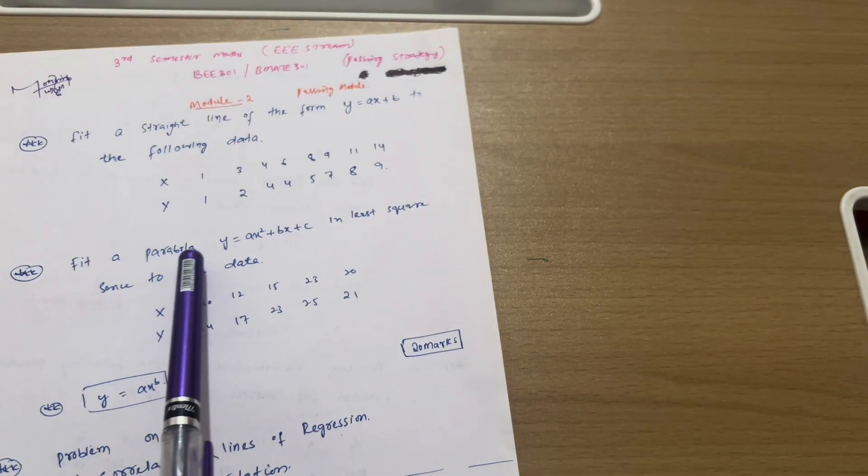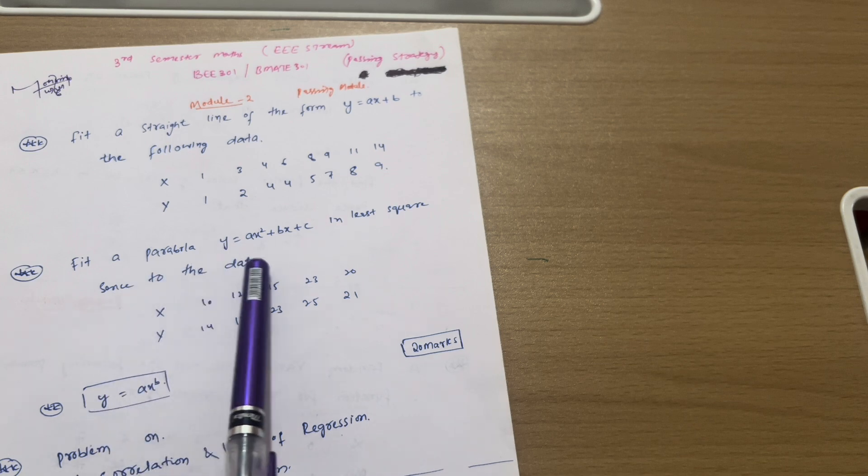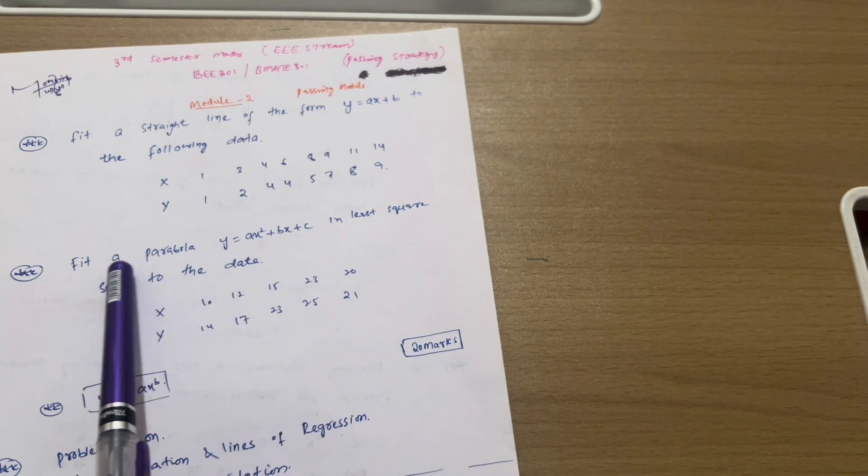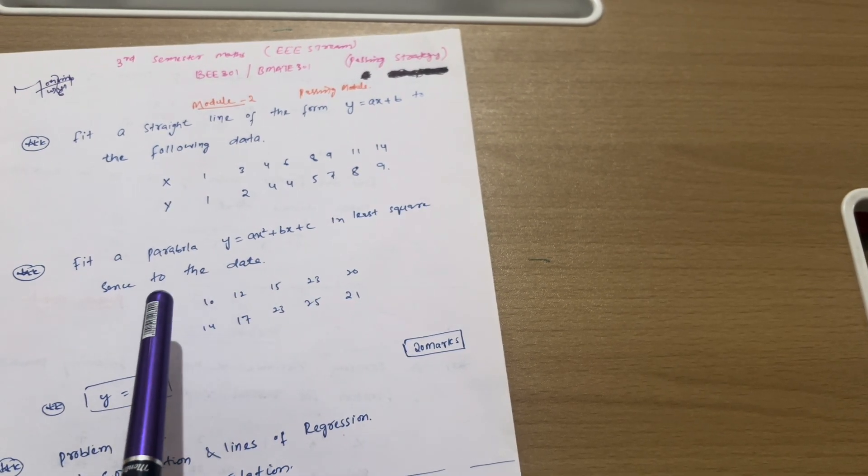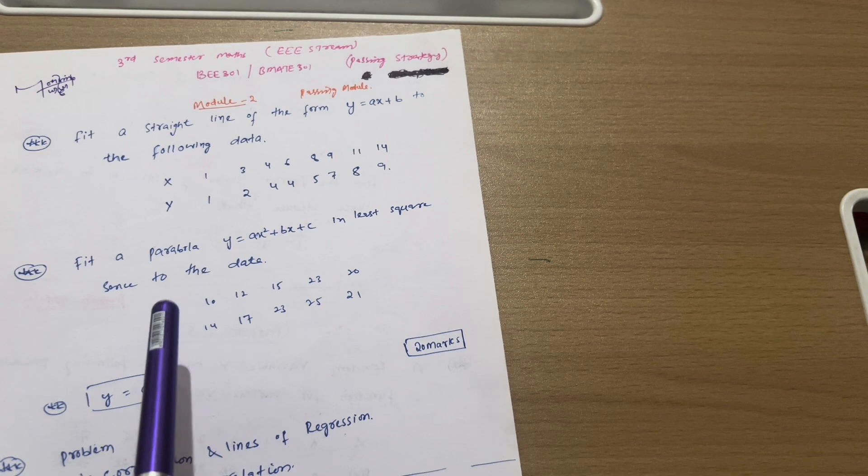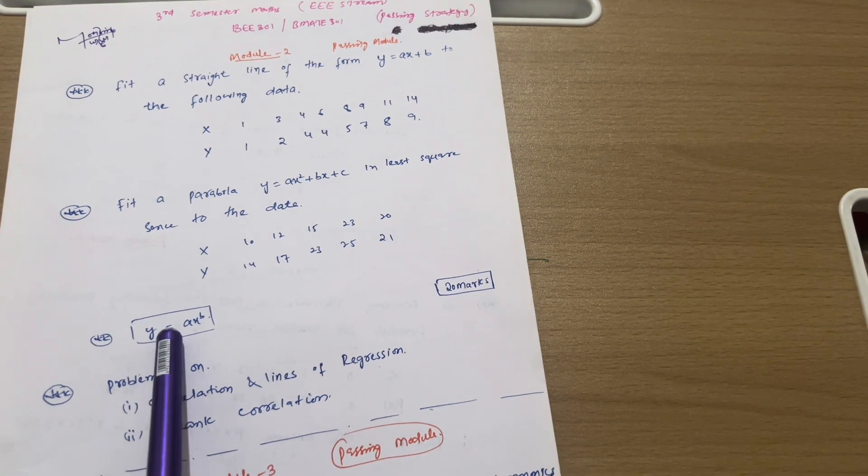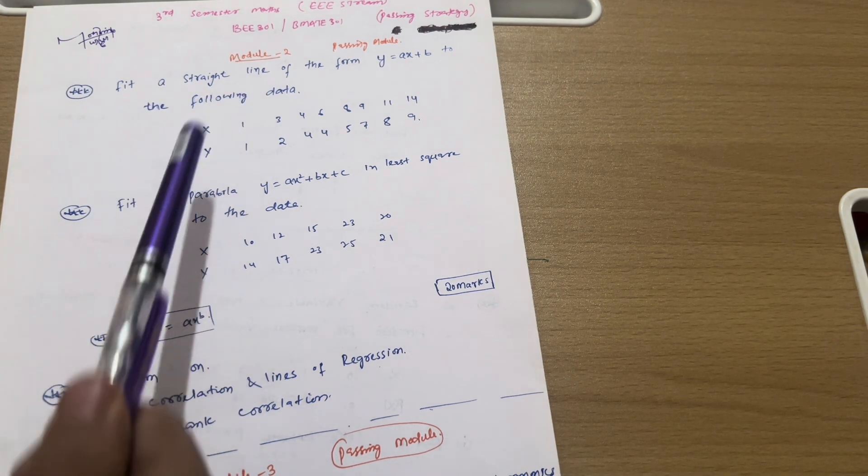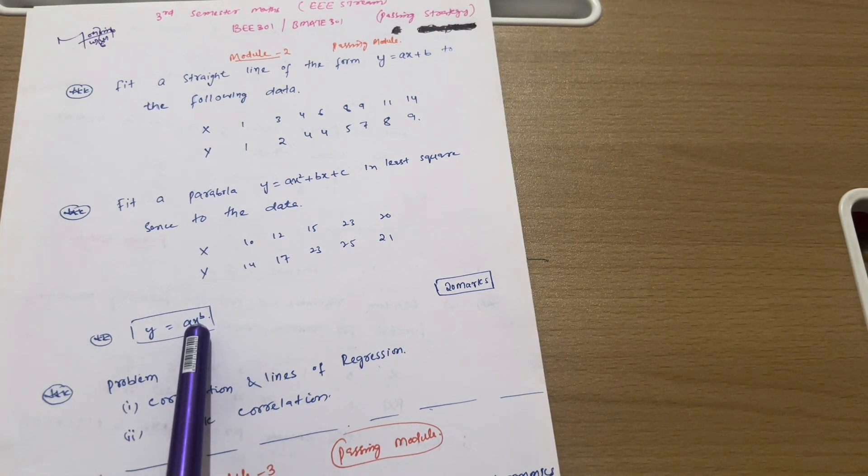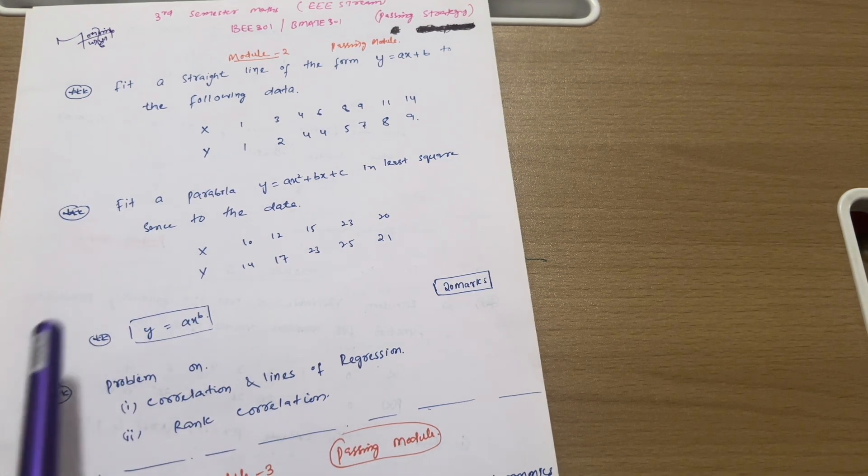Next we have fit a parabola y equals ax square plus bx plus c in least square sense to the data. So x and y are given values. Similarly, you have to fit a parabola curve. Video is available on this particular topic. I will provide the link in the description box where you can avail those problem solving videos. Next we have power curve that is y equals ax^b. At least try three problems on these concepts: straight line, parabola and power curve. So this becomes your 16 marks if you just cover these three portions.